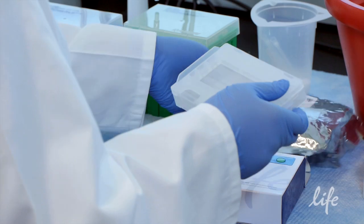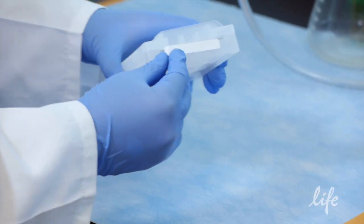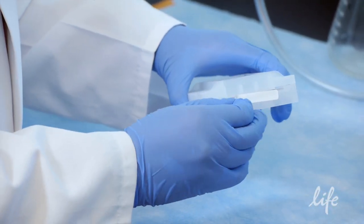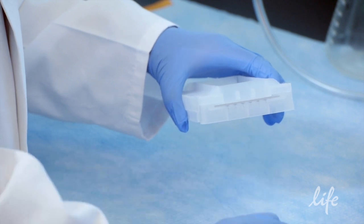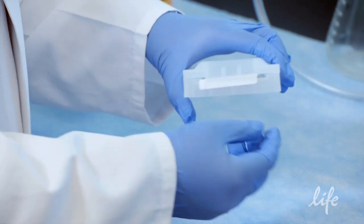First, start by vacuum drying the flowchip cassette. You will notice one end of the flowchip cassette is dedicated to vacuum drying, and the other end for injecting the reagent mixtures.